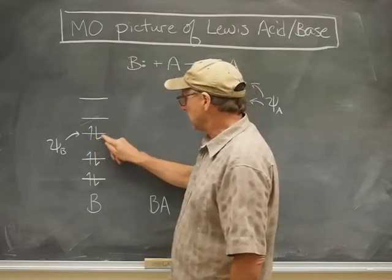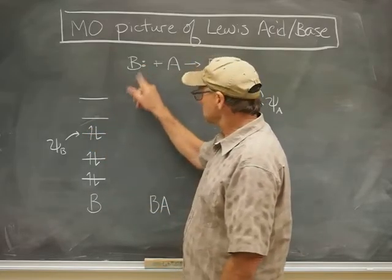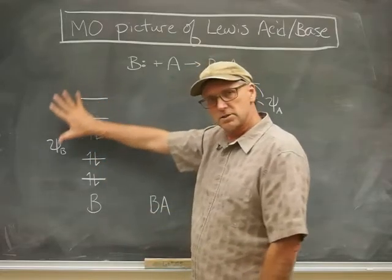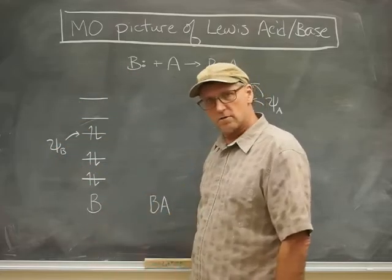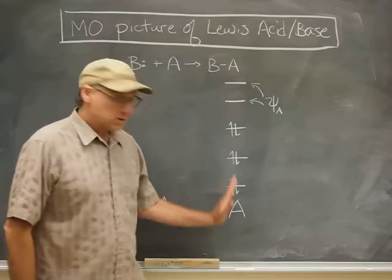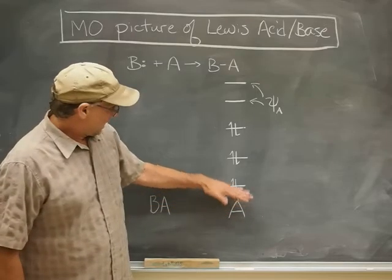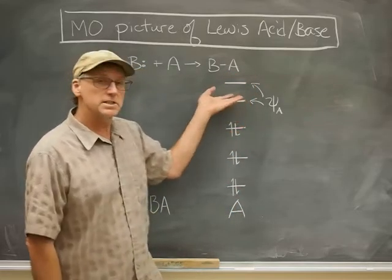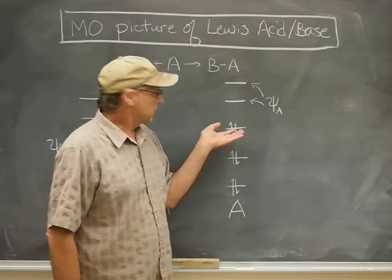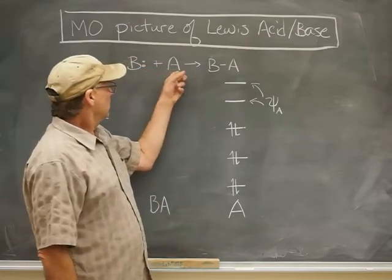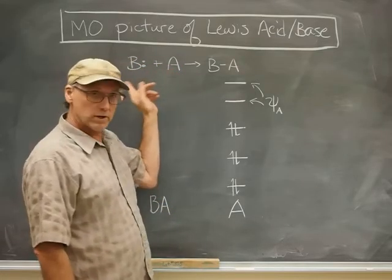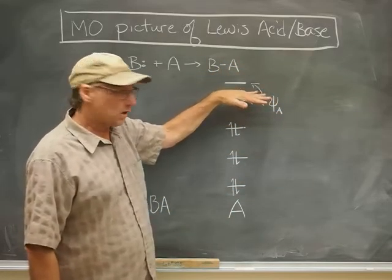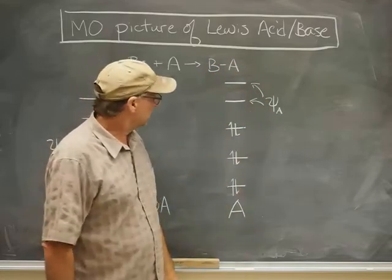That lone pair of electrons is the same as the electrons in that orbital — that's the MO picture of the base. Now for the MO picture of the acid: the Lewis Acid needs to have some orbitals that don't have any electrons in them, because it didn't bring any electrons to that bond. Usually it's the LUMO, the lowest unoccupied molecular orbital, but it might be one above that.